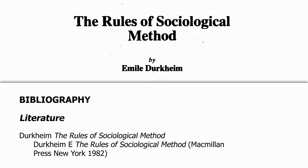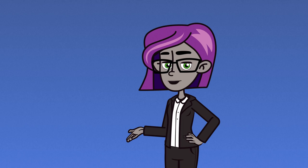As you can see, the author is Emile Durkheim. We include his initial, but without any full stops. Then follows the title of the book in italics: The Rules of Sociological Method. Again, no punctuation marks. Lastly, add the publisher — Macmillan Press — the place of publication, New York, and finally the year of publication, 1982. Note the use of the brackets.